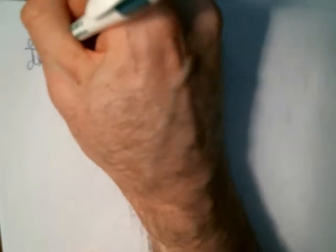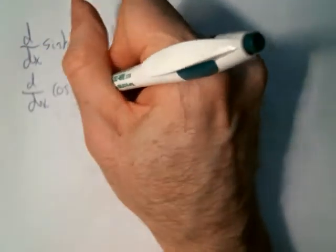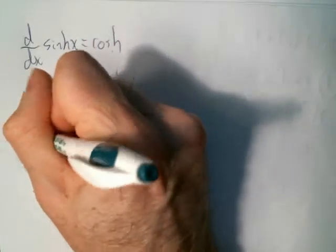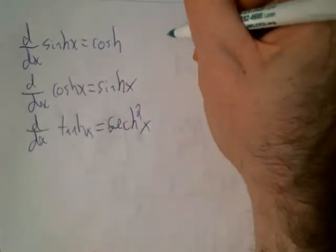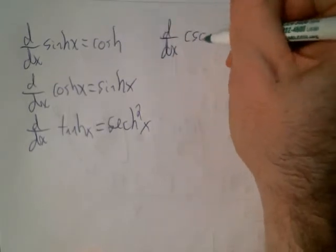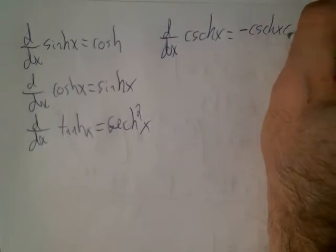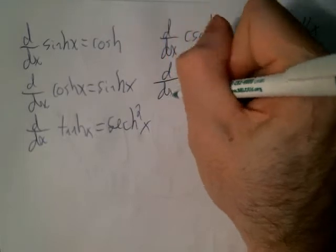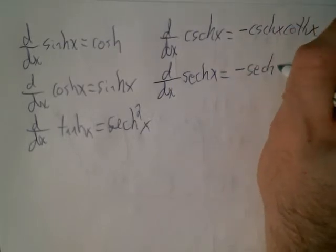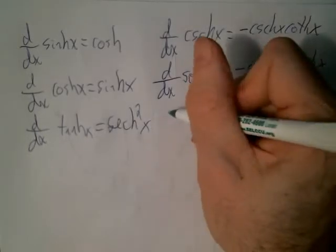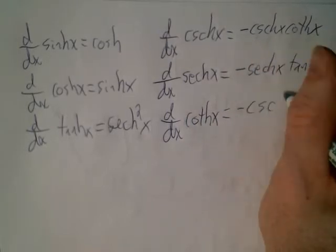Summary of derivative rules: the derivative of sinh is cosh; the derivative of cosh is sinh; the derivative of hyperbolic tangent is hyperbolic secant squared; the derivative of hyperbolic cosecant is negative hyperbolic cosecant times hyperbolic cotangent; and the derivative of hyperbolic cotangent is negative hyperbolic cosecant squared.